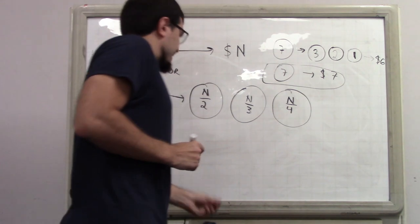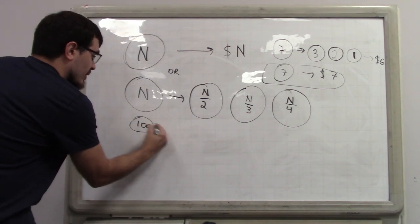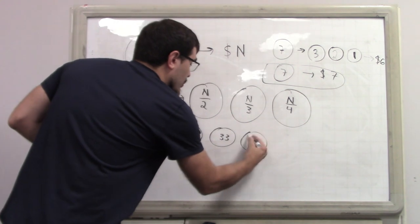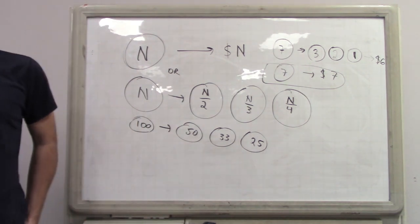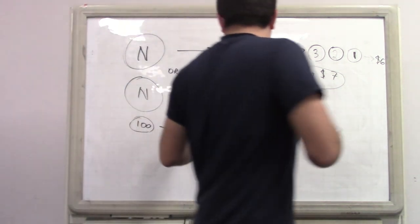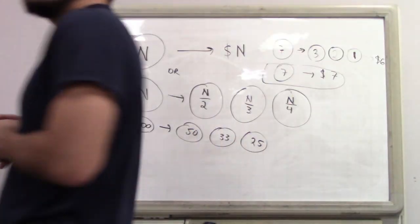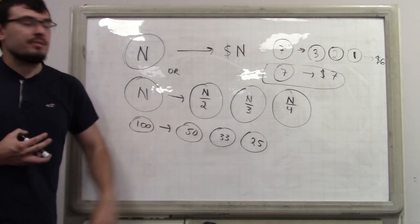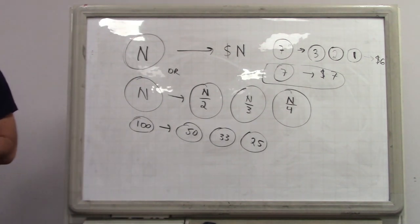But other coins — for example a 100 coin — it's clearly better to trade. If we trade it, we get 50, 33, and 25. Even if you were to sell these coins on the spot, you're already earning more than $100. And maybe you can do even better by further trading those coins. The reason trading is not always better is just because of the truncation, but clearly for large enough numbers the truncation effect is negligible.